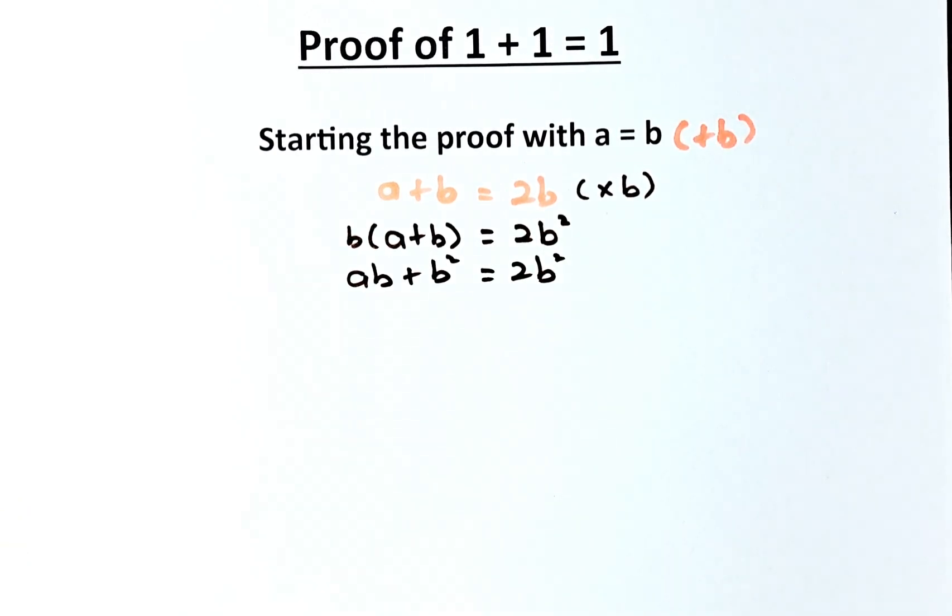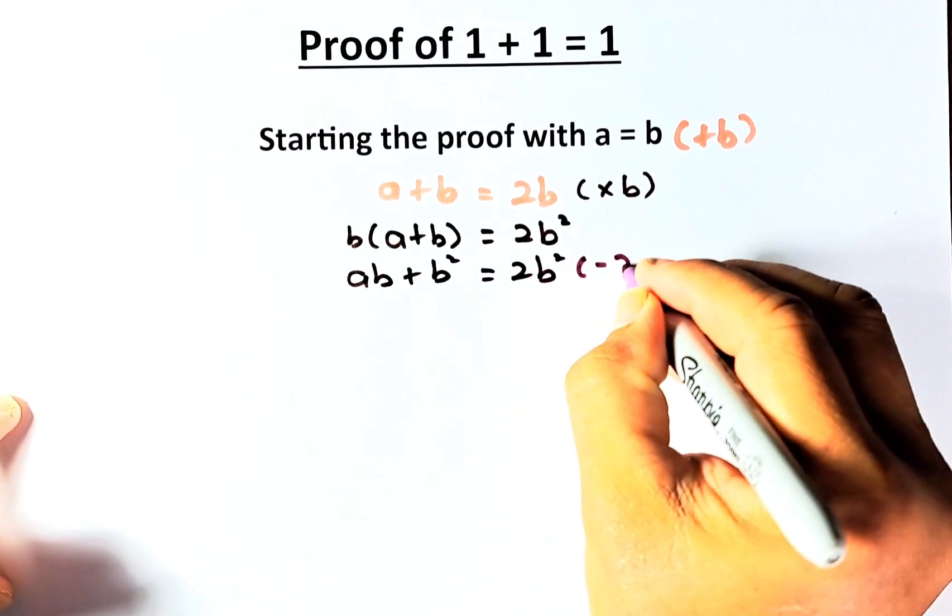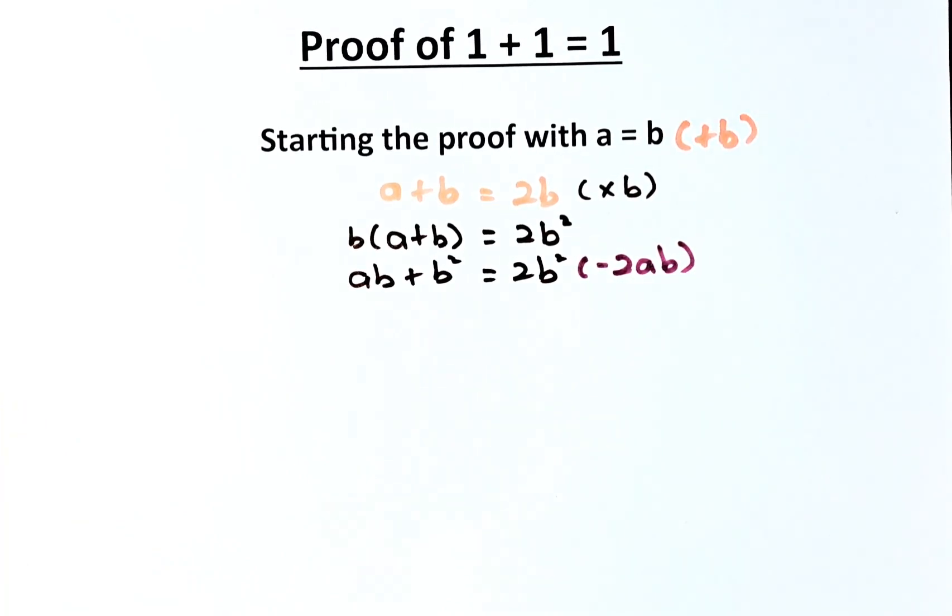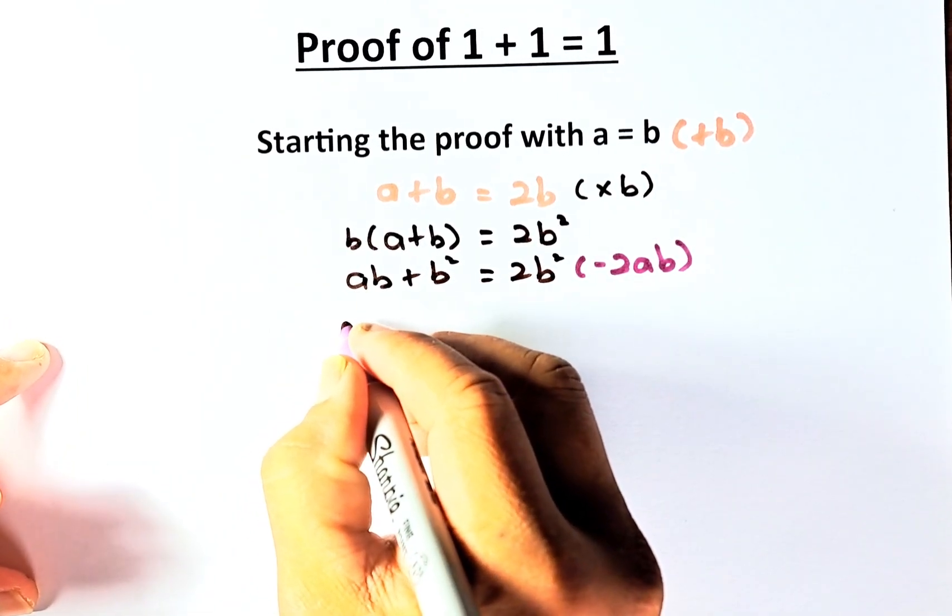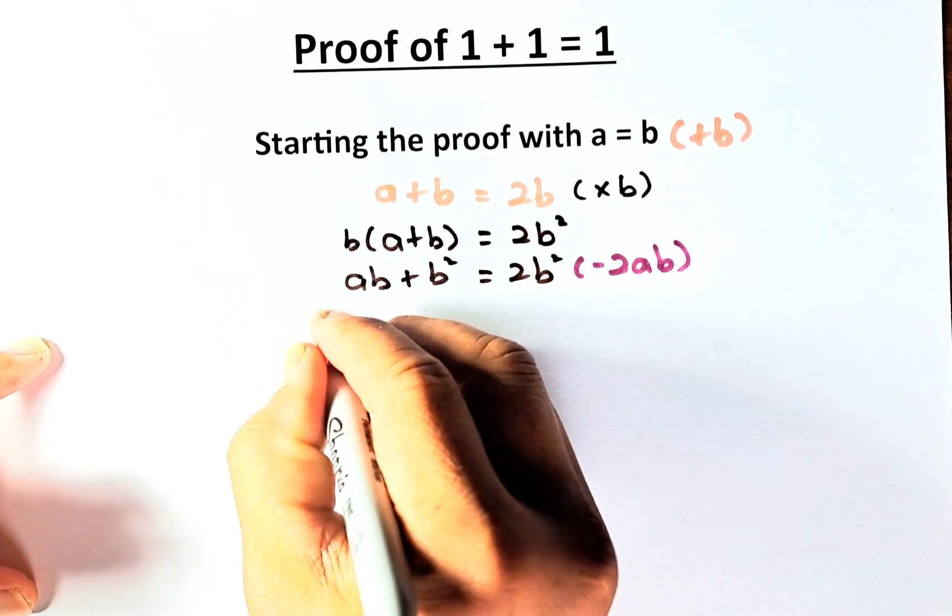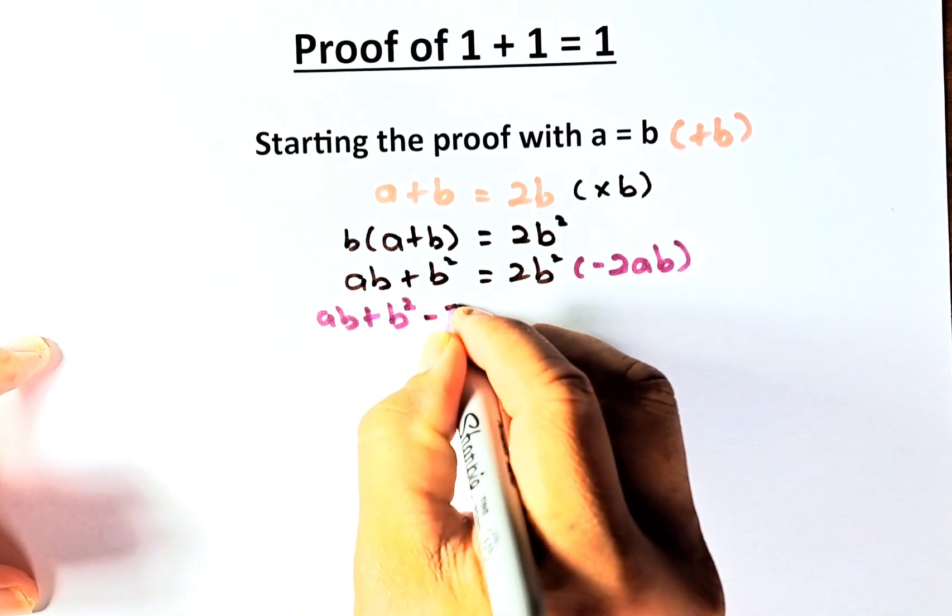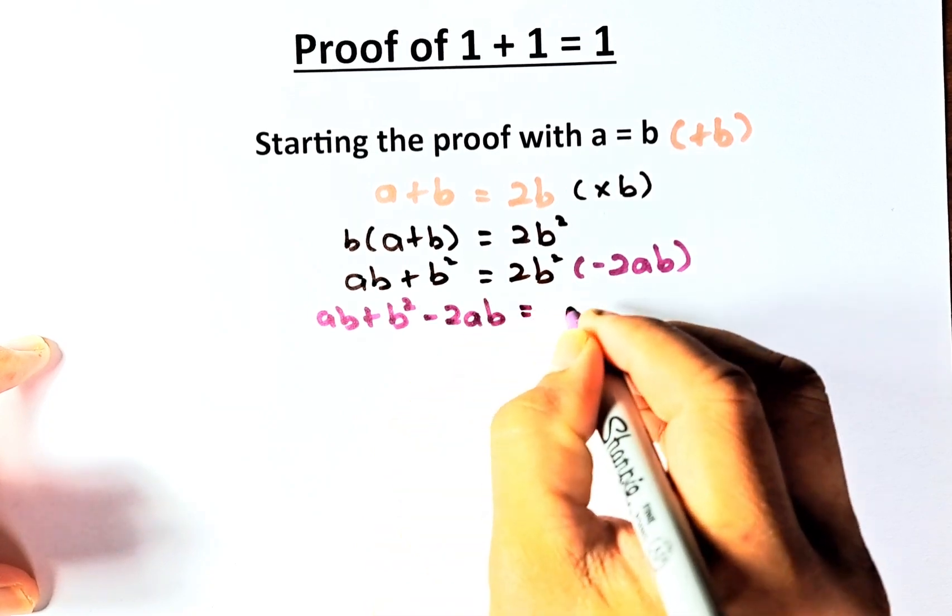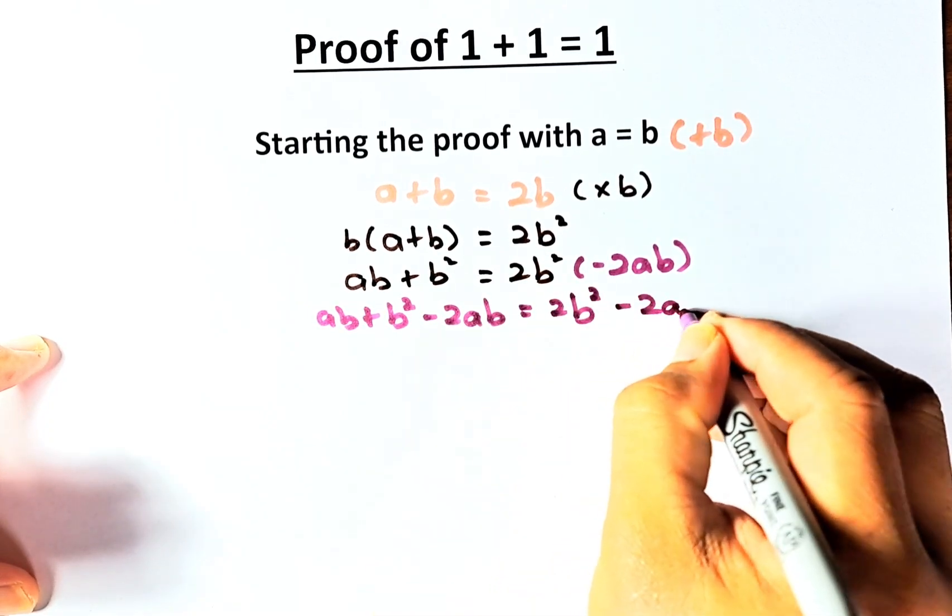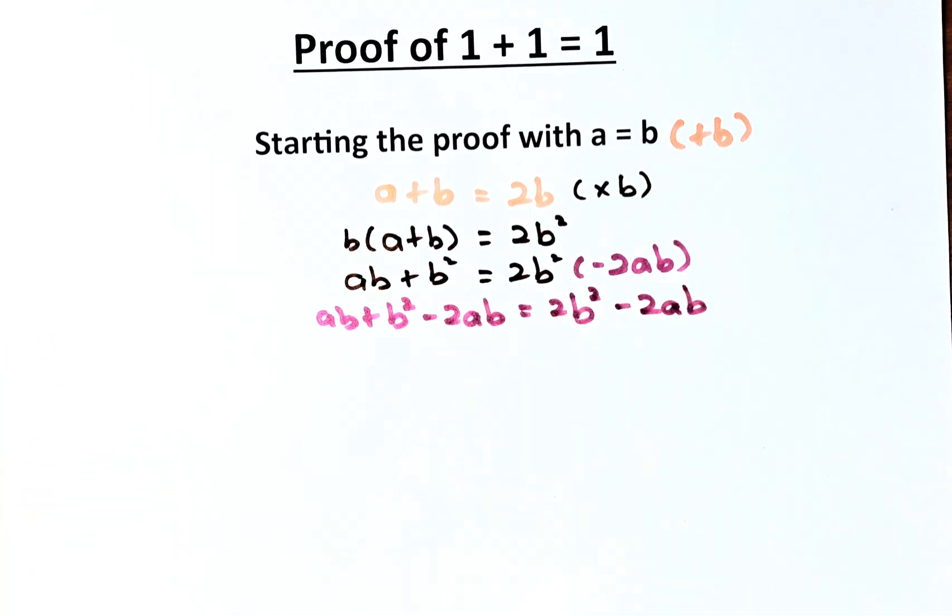Next, what we're going to do is we are going to minus 2ab on both sides of the equation. So that equation now, on the left-hand side, I'll just adjust the paper a bit, ab plus b squared minus 2ab equals to 2b squared minus 2ab. Are you following me so far?